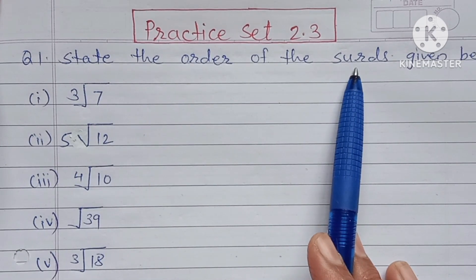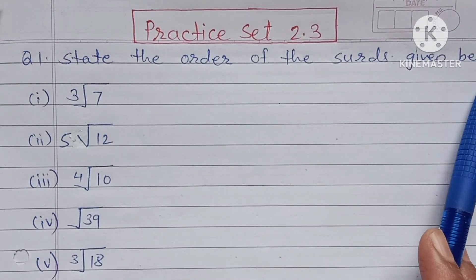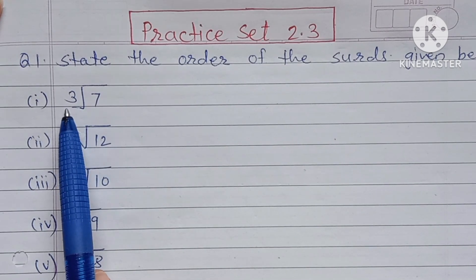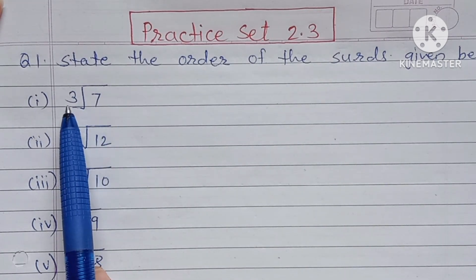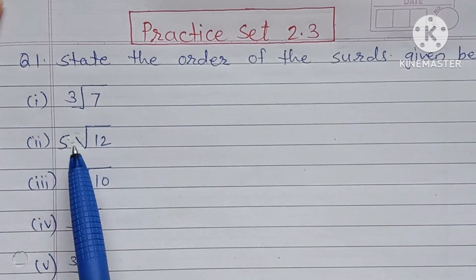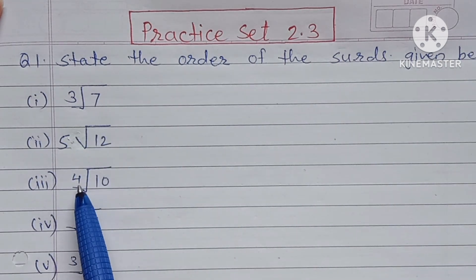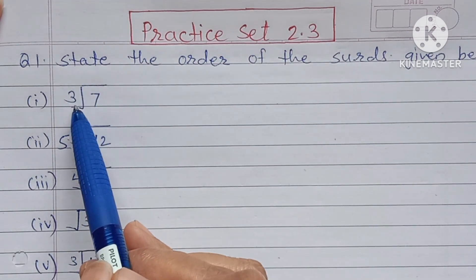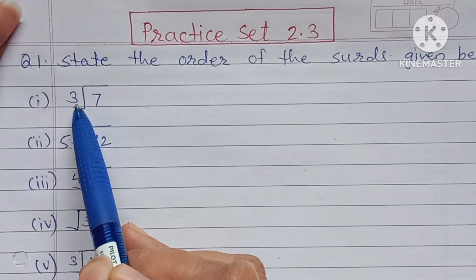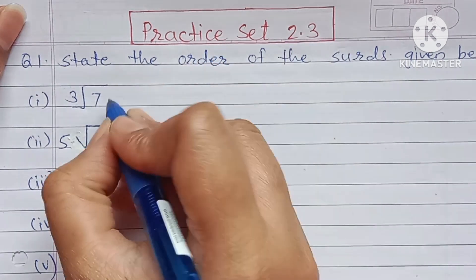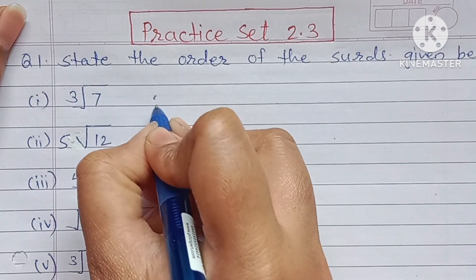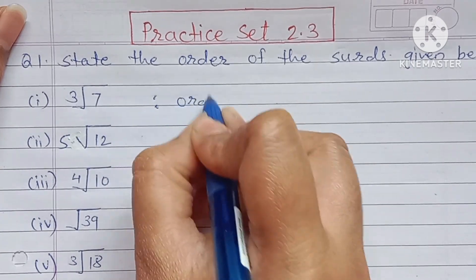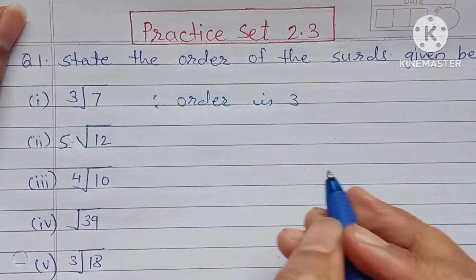State the order of the surds given below. It is very easy. First, cube root of 7 — this is the order of 3. Writing the answer: order is 3.